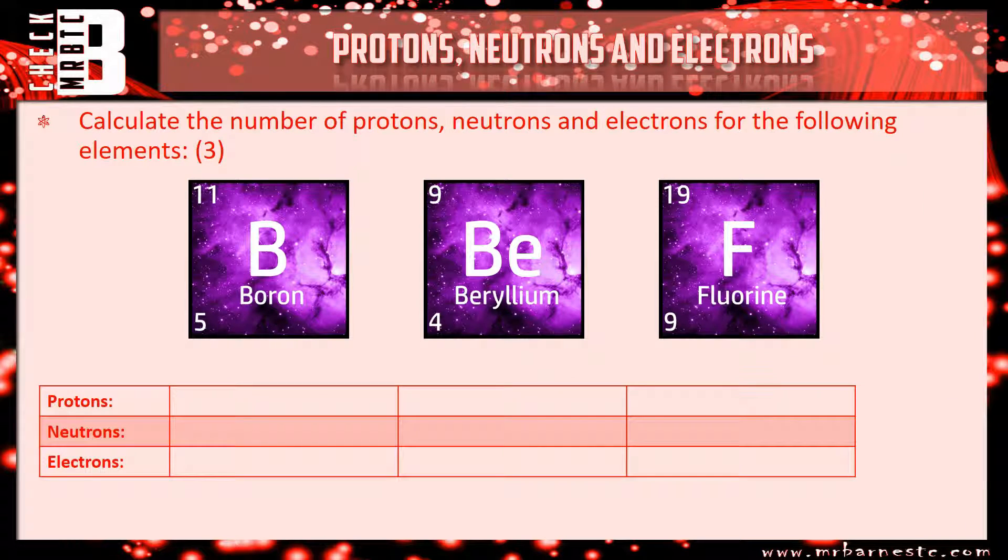Right, let's go through. So we'll start off with boron. You should remember that the bottom number is the number of protons. It's also the number of electrons, so I've got 5 of each. And then your neutrons, big take away a little, 11 take away 5 is 6. So one mark for that one.